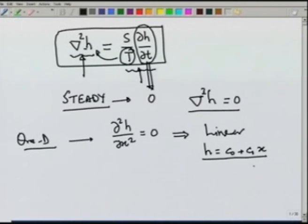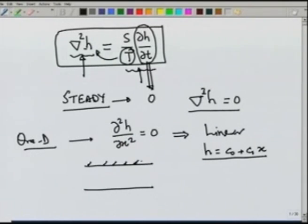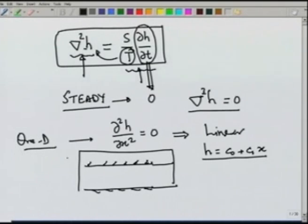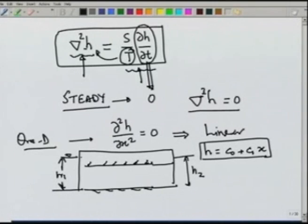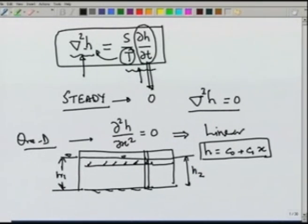This gives us a linear head profile: h equals c₀ plus c₁x. The values of c₀ and c₁ are obtained from boundary conditions. As we saw in the previous lecture, if flow is occurring between two water bodies with elevations h₁ and h₂, the head variation within the aquifer is linear, and the piezometric level would be a linear profile joining h₁ and h₂. If we install a piezometer at any location, the water will rise to the corresponding level on that linear profile. This one-dimensional flow is easy to solve but not very practical.